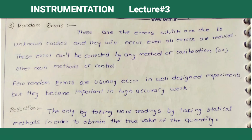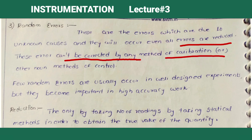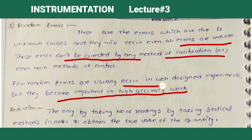Next are random errors. These are errors due to unknown causes — we do not know what causes random errors. Even after all other errors are reduced, these errors remain in the instrument. These errors cannot be corrected by calibration or any other method. Random errors occur even in well-designed instruments and become important in high accuracy work. The only way to reduce these errors is by taking a large number of readings. There are many methods to analyze and reduce random errors — one is statistical analysis of random errors, which will be discussed in the next class.